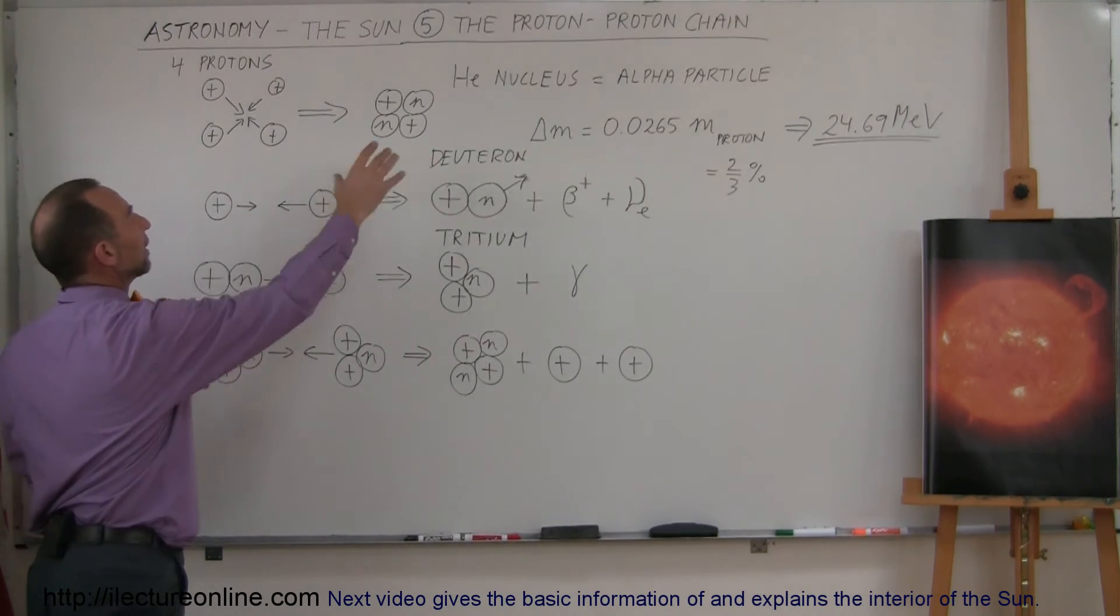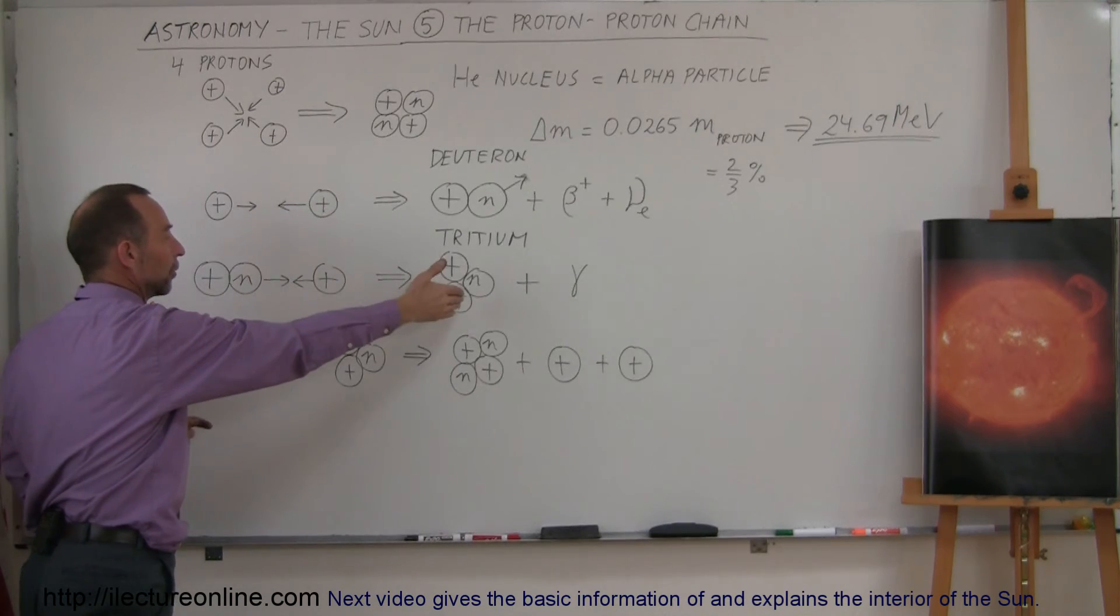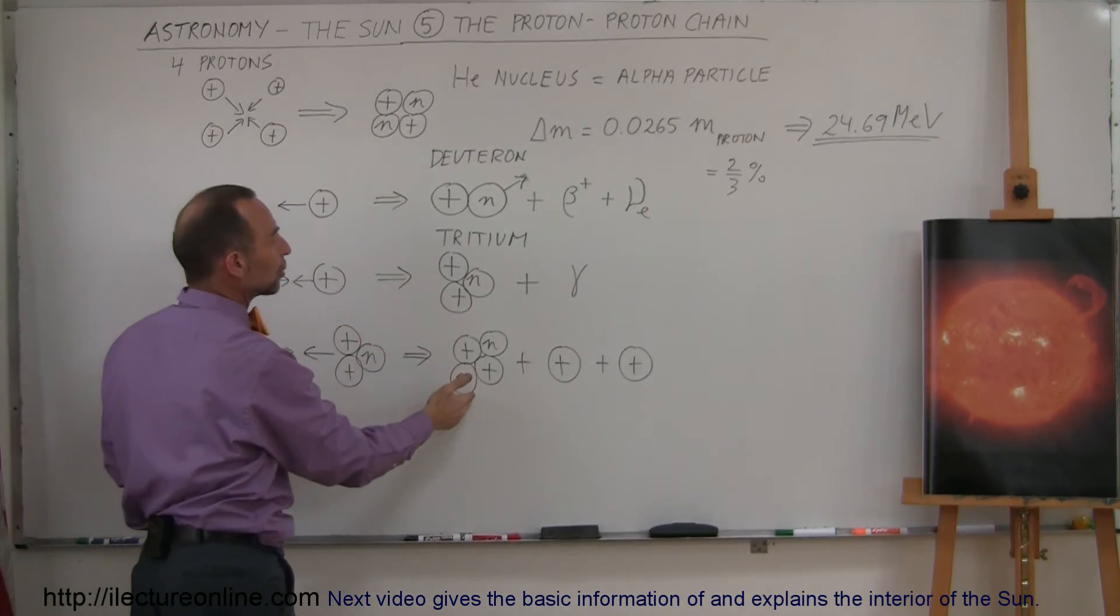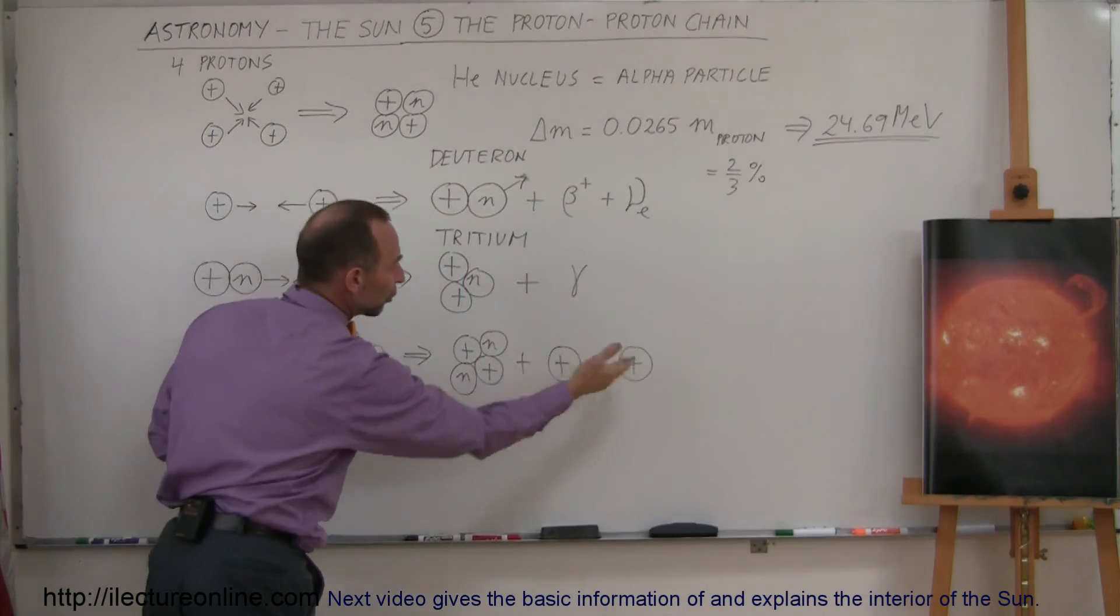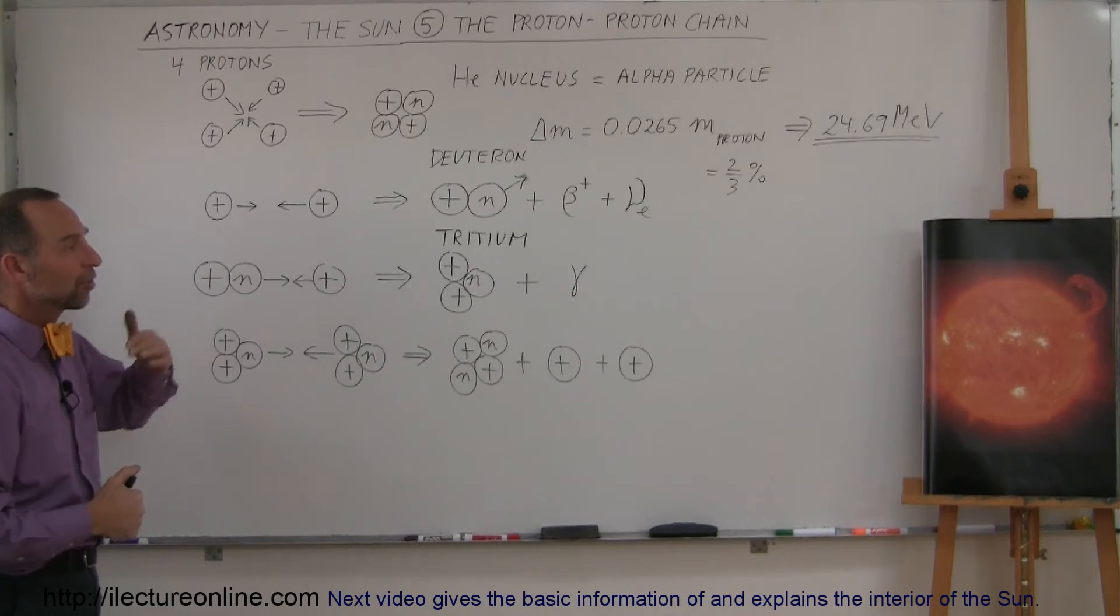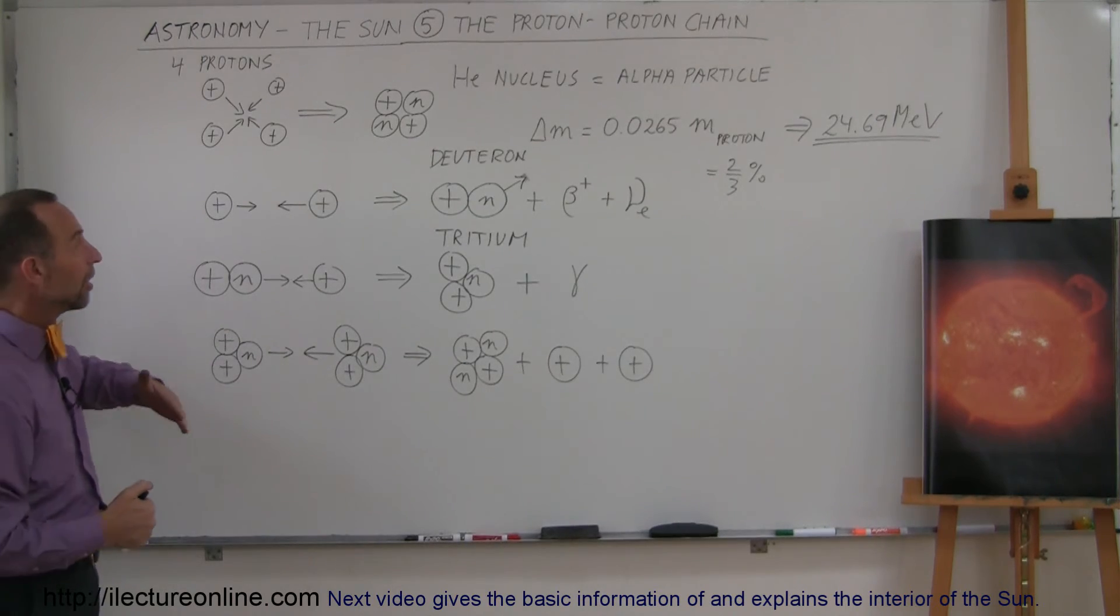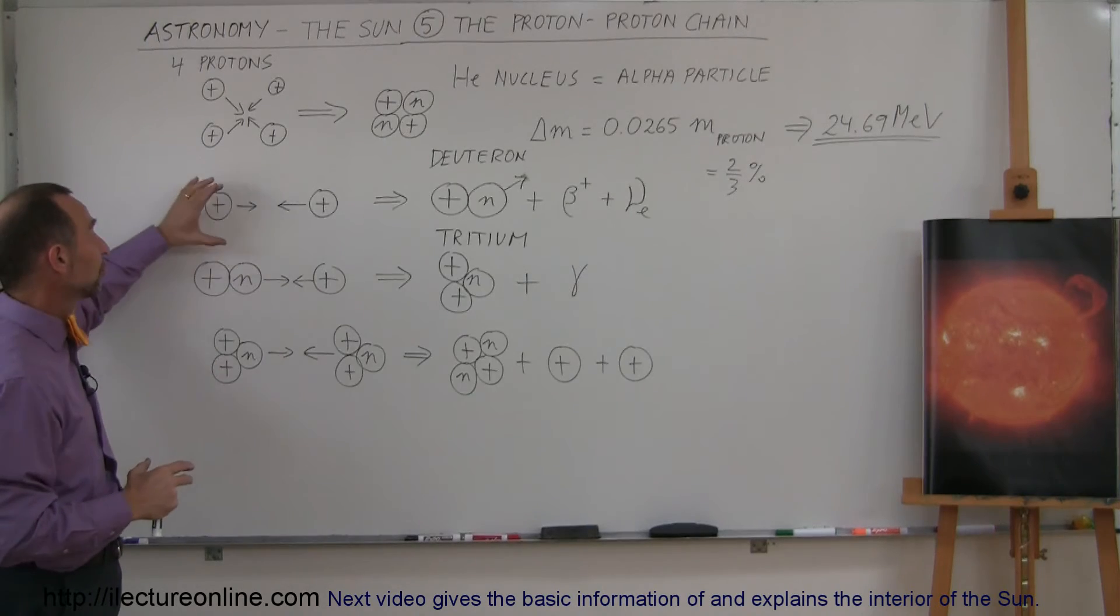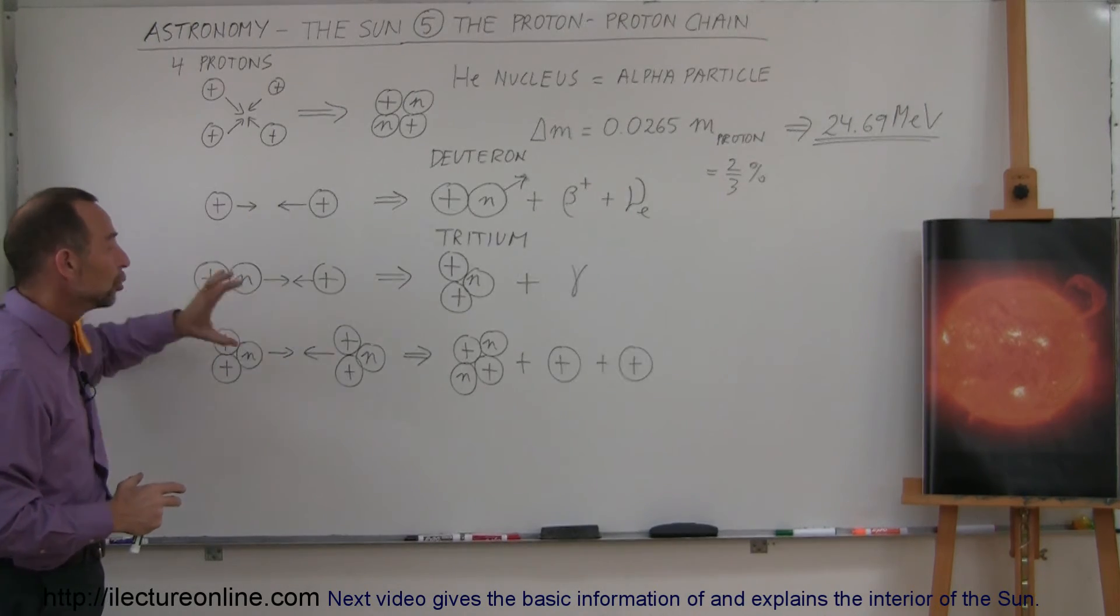But here when they meet, they form deuterons. When deuterons slam into protons, they form tritiums. When tritiums slam together, they form helium nuclei, which are alpha particles, with two protons left over, and they just continue this process. And this process just continues and continues, until the entire nucleus of the sun, or the entire core of the sun, has turned all of its hydrogen into helium.